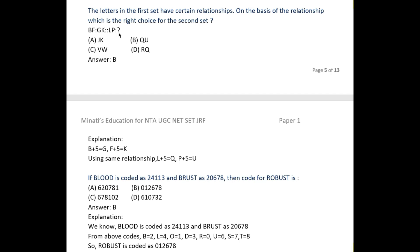After LP, which one should come? The four options are JK, QU, VW, and RQ. How to do these types of sums: you have to watch the progress of the letter. B, after that G. If you add five digits earlier...